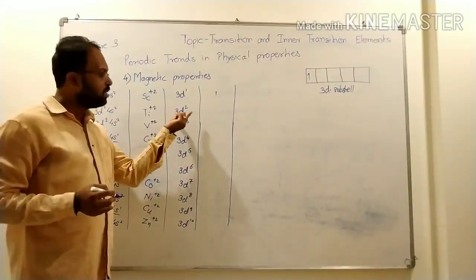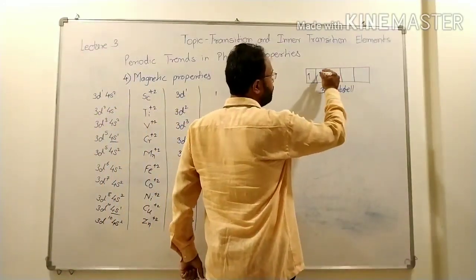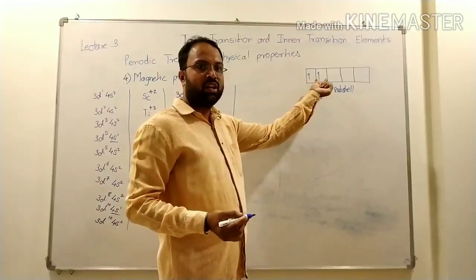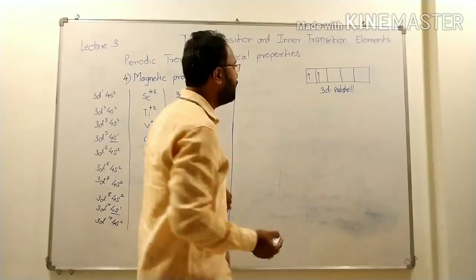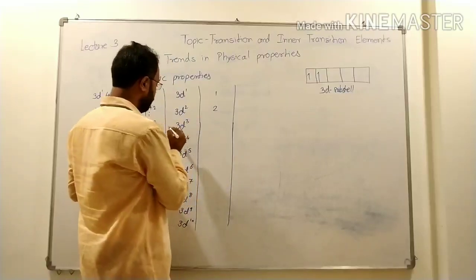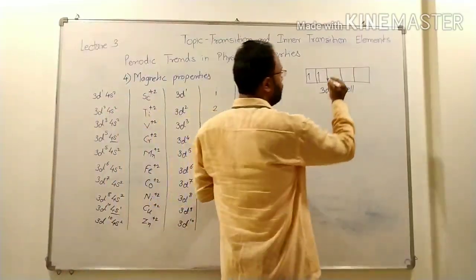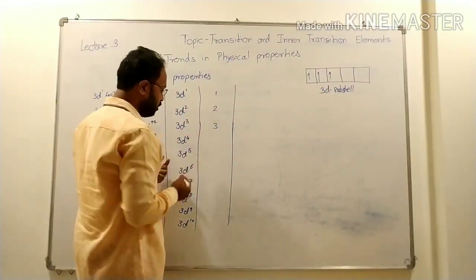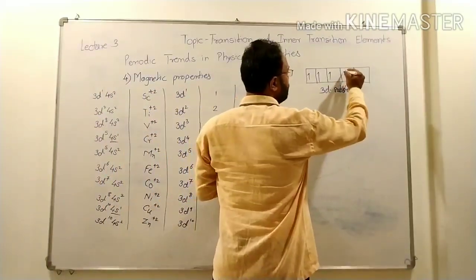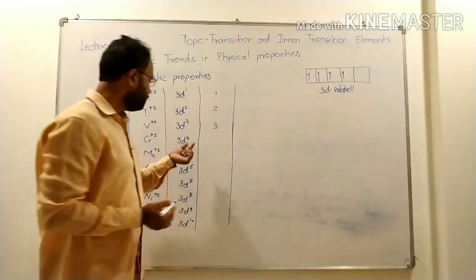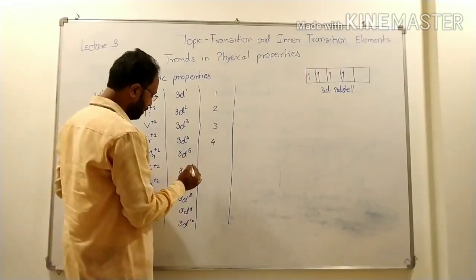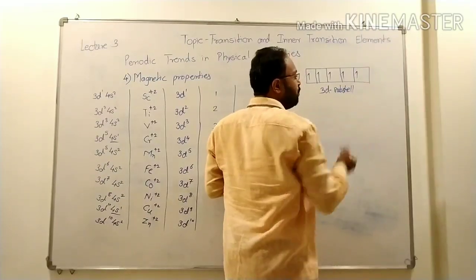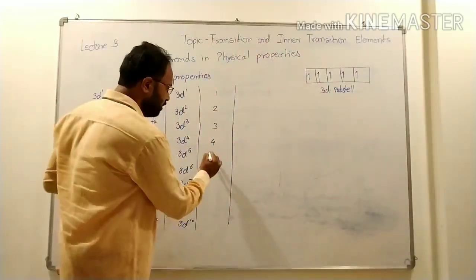For titanium, there are two electrons — first in the first orbital and second in the second orbital — because of Hund's rule of maximum multiplicity. So there are two unpaired electrons. For 3D3, the third electron is placed in the third orbital, giving three unpaired electrons. For 3D4, the fourth electron is placed in the fourth orbital, giving four unpaired electrons. For manganese, the fifth electron is placed in the fifth orbital, giving five unpaired electrons.